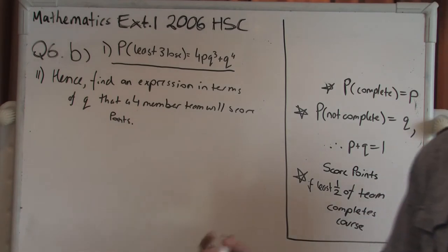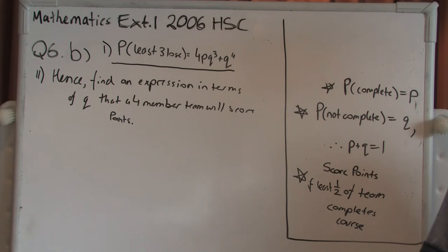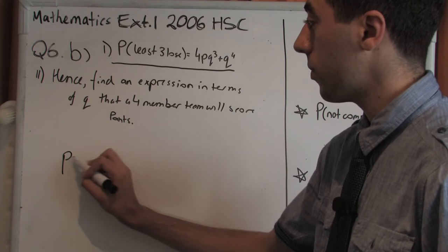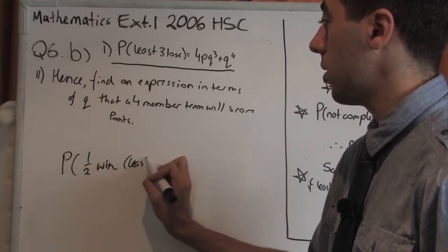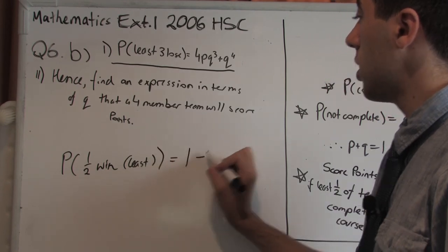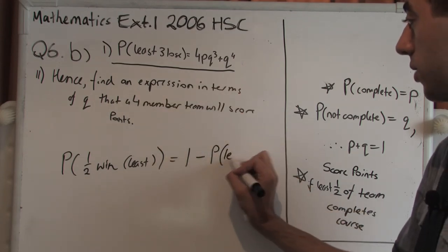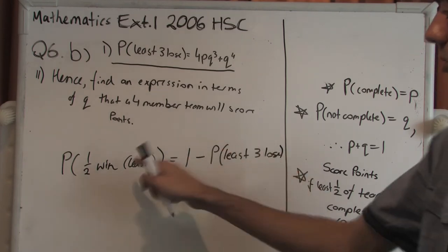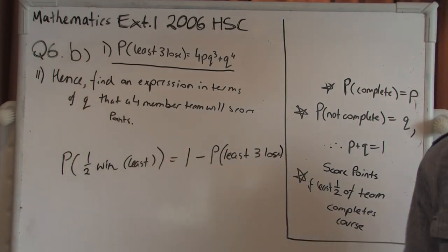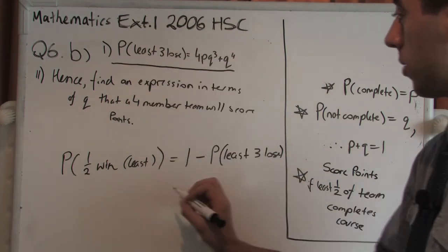So when it says hence, we're going to have to use part I in this case. If at least three of them lose, that means that only one of them wins or none of them win. So that must mean that the probability that at least half of them win would instead be equal to one minus the probability that at least three of them will lose. Because if you add these two together, you'd get all the possibilities for this scenario.